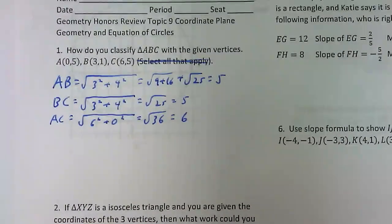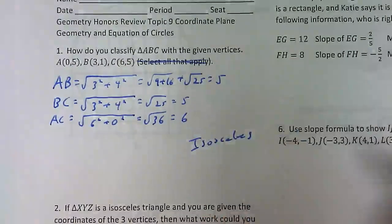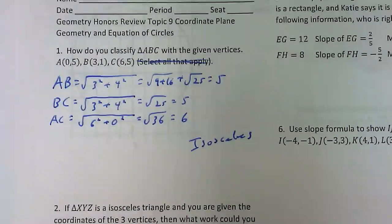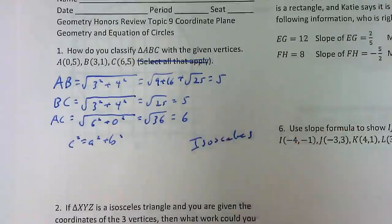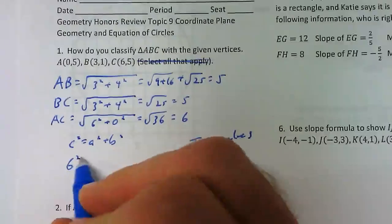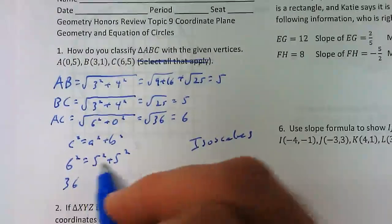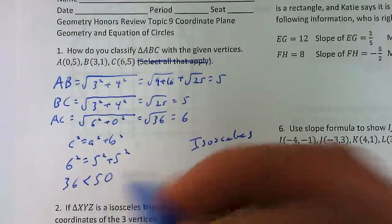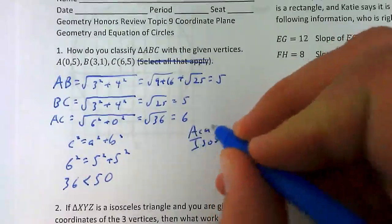If two sides are the same, it's isosceles. Not equilateral because not all three are the same - it's only isosceles. You can also classify based on angles using the sides. We plug into the Pythagorean theorem: c squared equals a squared plus b squared. The c value is 6, the longest side. So 6 squared equals 5 squared plus 5 squared: 36 versus 50. Since c squared is less than the sum of the other two, it is acute. This is an acute isosceles triangle.